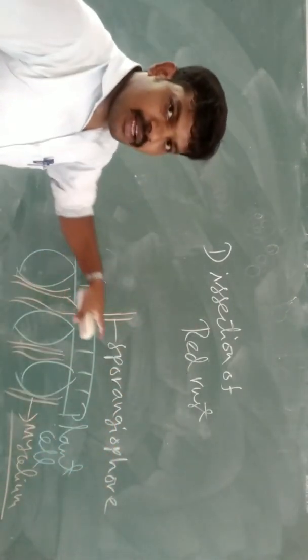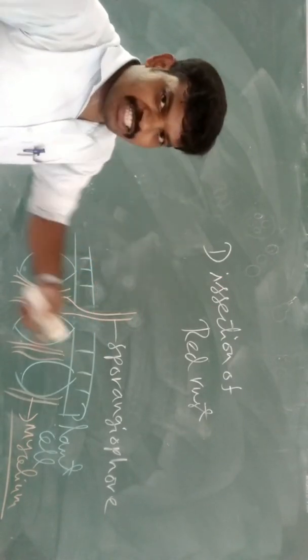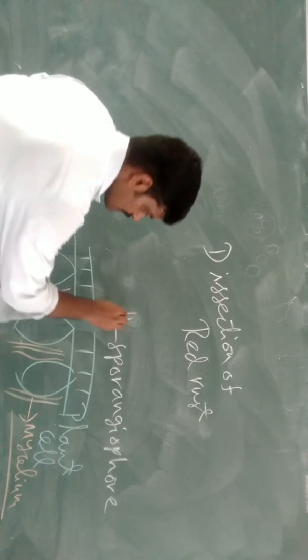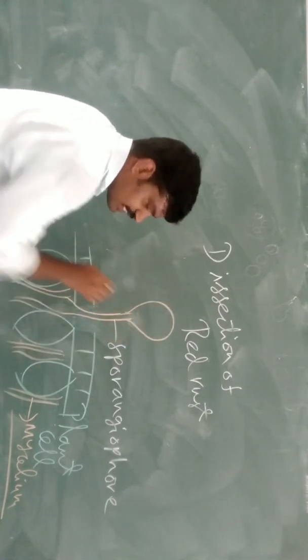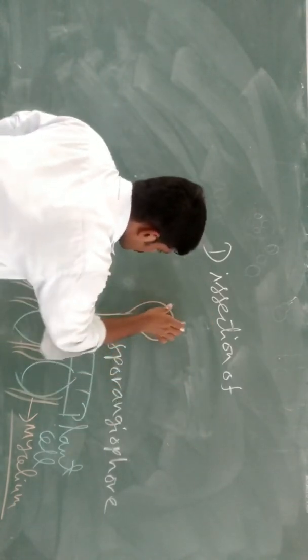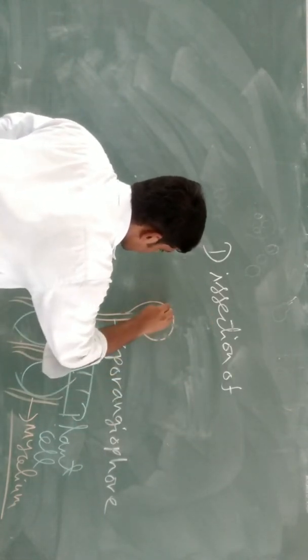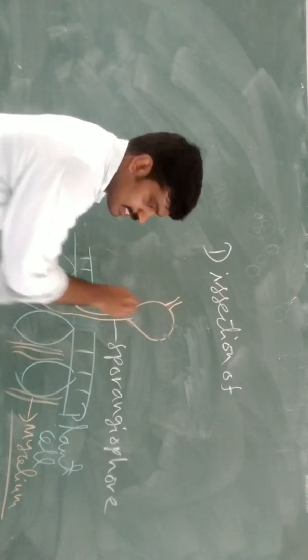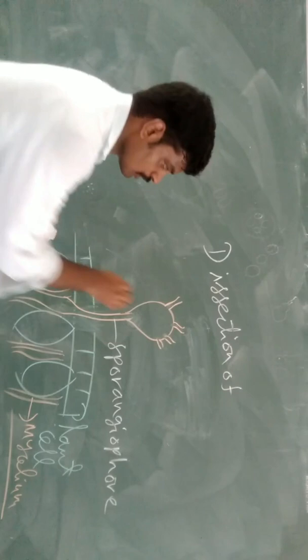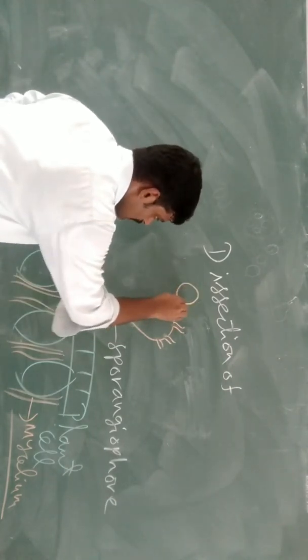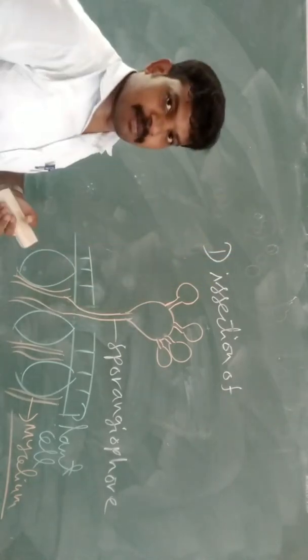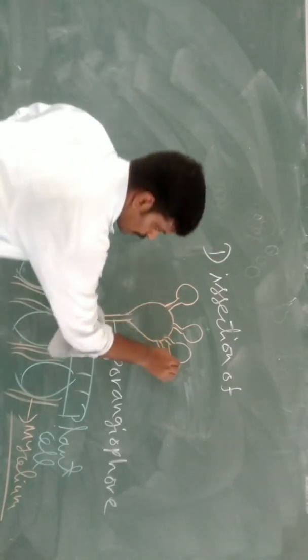Sporangiophore is there. Hyphae which produces sporangium, so sporangium is a fat-like structure. Before that, it will produce swollen vesicles. From this vesicle, it will produce sterigmata. Sterigmata is a spore bearing structure. Through this spore bearing structure, it will produce sac-like sporangium.